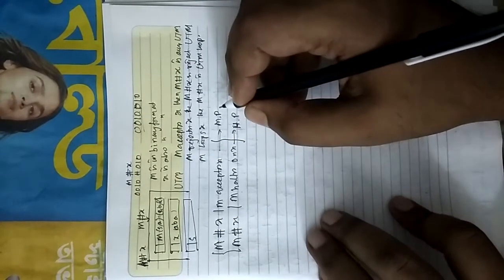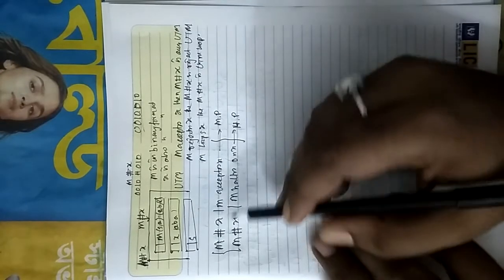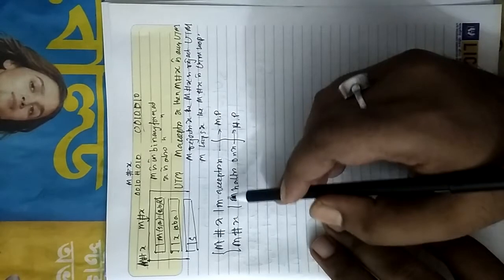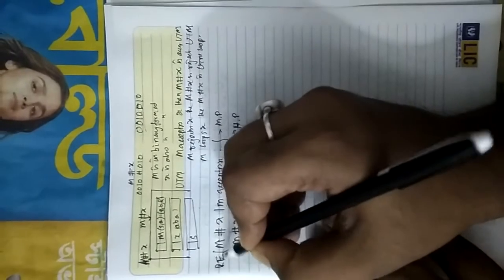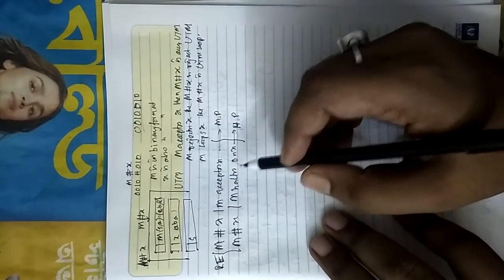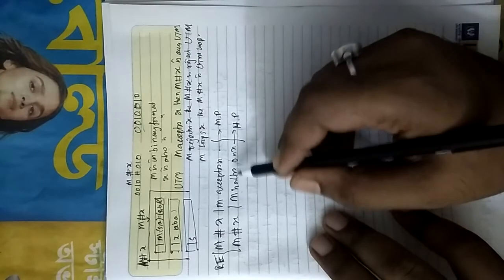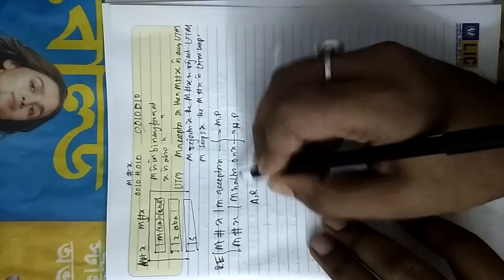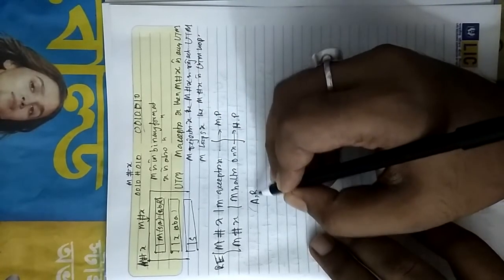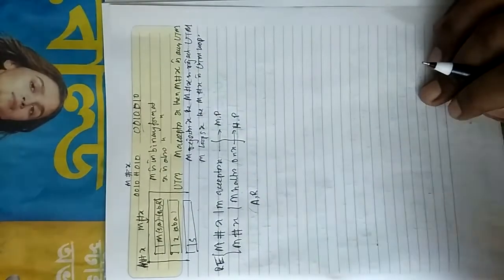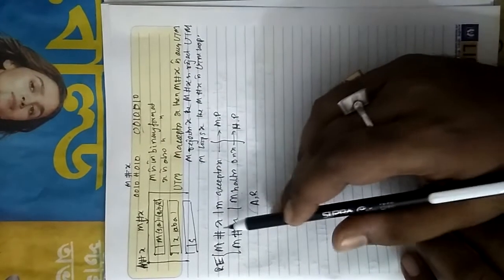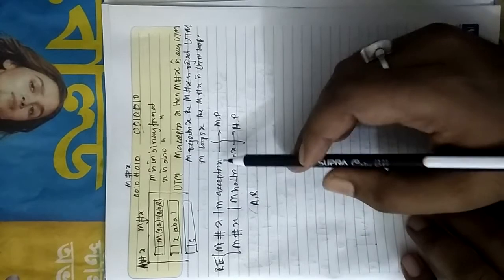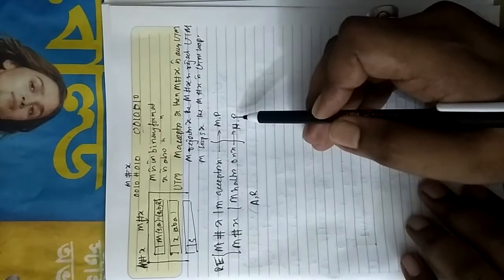When M accepts X, the language is recursive enumerable. Halts means either accept or reject — there is no loop. So if the machine halts, it either accepts or rejects. The membership problem is M accepts X, and the halting problem is M halts on X. These two languages are different.